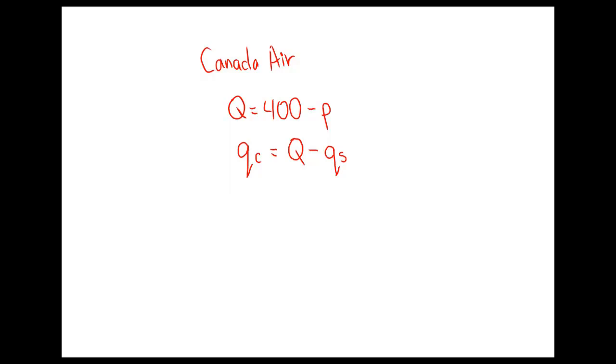If we rewrite it as an inverse residual demand function, we'll replace Q with this expression, so 400 minus P equals QC plus QS. Then we want the inverse function, so we're going to put P on the left hand side.